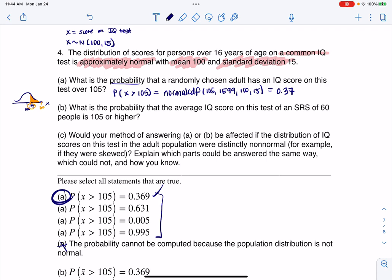This says, what is the probability of the average IQ score on this test of an SRS of 60 people is 105 or higher? So some buzzwords floating through here. I do still see probability, but the big one is average.